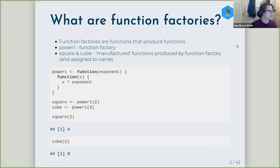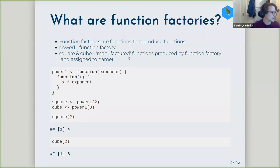What are function factories? Function factories are functions that produce functions. In this example on the slide, power_one is the function factory. And just as factories normally do, they manufacture functions. So here, square and cube are manufactured functions that have been produced by power_one.